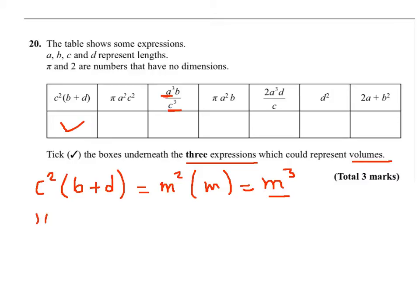The fourth one is pi a squared b. Pi is a number, a squared is meter squared, and b is meter, so I'll get cubic meters, so that is a volume.